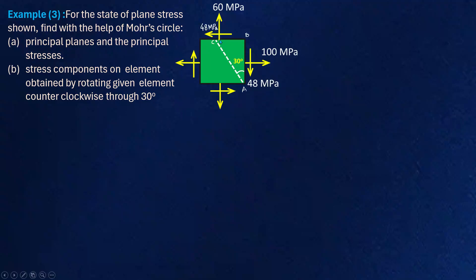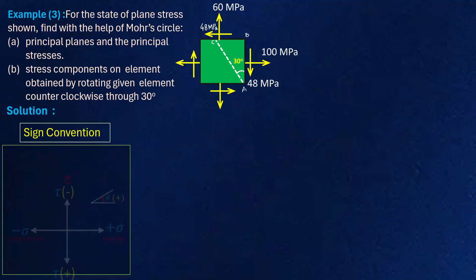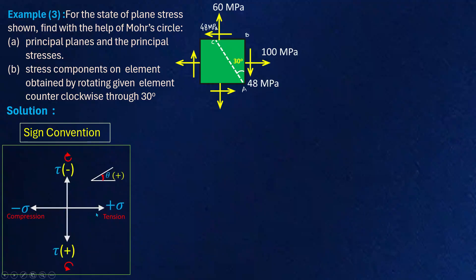With the help of these two given planes we can draw the Mohr circle. Before drawing, let us understand the sign convention. The horizontal axis represents normal stress and the vertical axis represents shear stress. Tension is positive (rightward), compression is negative (leftward). Clockwise shear stress is negative; anti-clockwise shear stress is positive. An anti-clockwise angle is taken as positive.